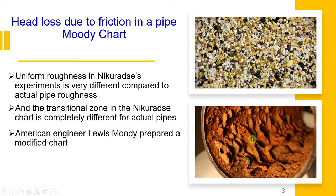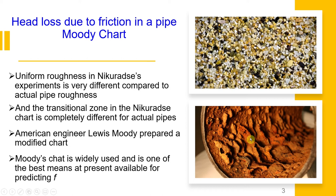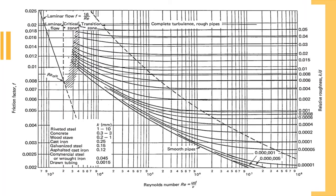American engineer Lewis Moody prepared a modified chart. And Moody chart prepared by Lewis is widely used as one of the best means to predict friction factor. And this is how this Moody chart looks like. It's very similar to Nikuradse chart, but a little bit different in this transition zone.